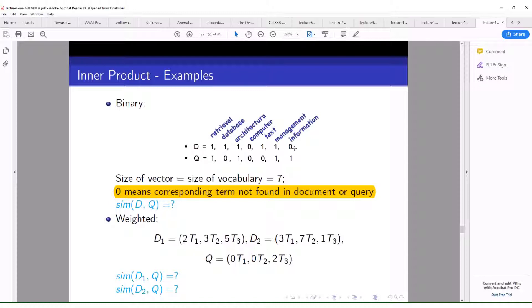So let me look at this example. Here you have D, which represents a query—I mean a document, one of the documents in your corpora—and you have Q, which represents your query. Now in your document you have these following terms. We call them terms: these words retrieval, database, architecture, computer, text, management, information.